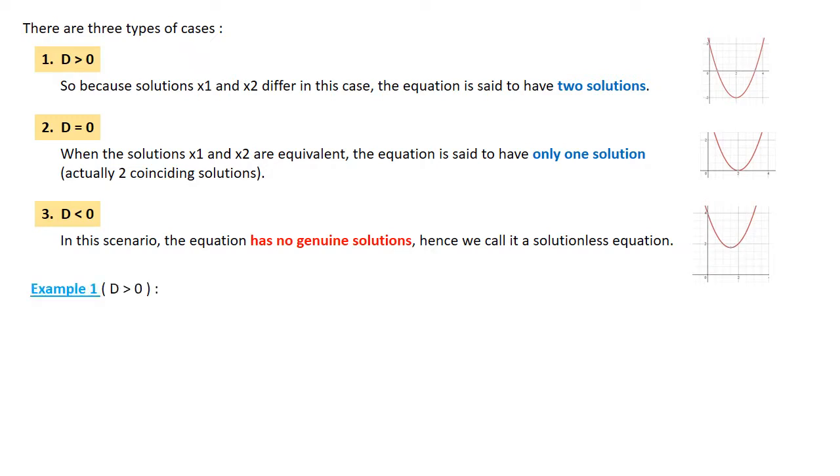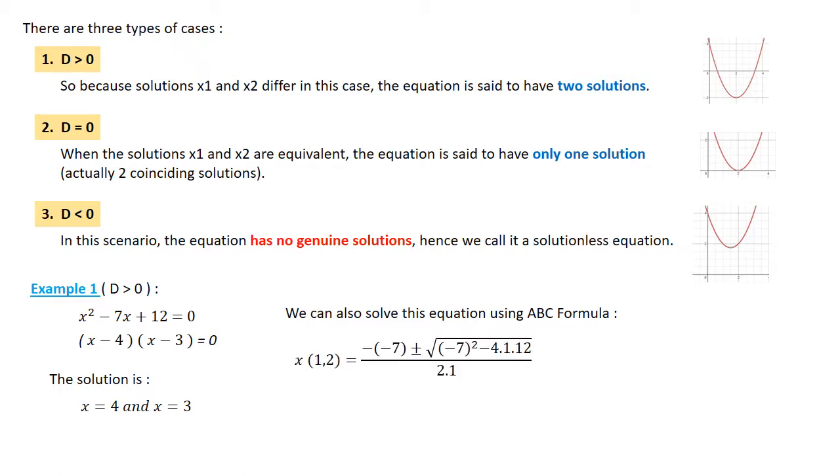Example 1: 4x² - 20x + 25 = 0, which factors to (2x - 5)(2x - 5) = 0. The solution is x = 5/2. We can also solve this equation using ABC formula: x(1,2) = (20 ± √(400 - 400))/8 = 20/8 = 5/2. We have the same solution.